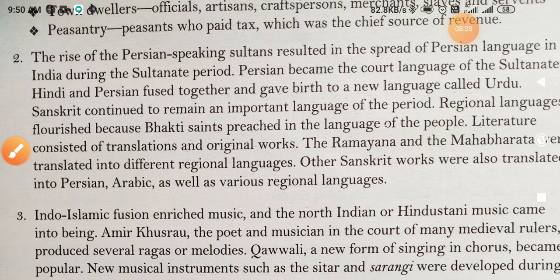Question number 2 asked about literature and language development. At that time, Persian language developed. With Indian and Persian mixing, a new language developed. Sanskrit language remained important. Bhakti saints preached in the native language which people could understand. Literature consisted of translation and original works — the Ramayana and Mahabharata were translated into Persian and Arabic.